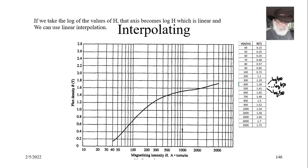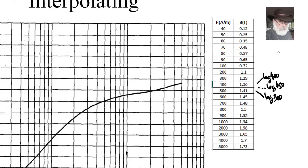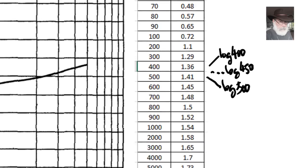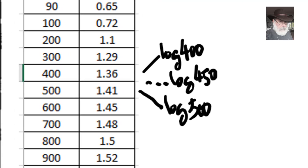Let's do that with an example. Here, let's say that we want to find what is the value for the flux density when H is 450 amps per meter. The temptation would be to say, well, 450 is halfway between 400 and 500. So B at 450 should be halfway between 136 and 149, and that is the average of them. No, not really.